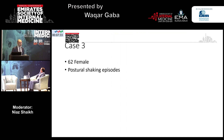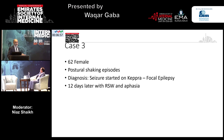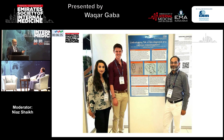Case three: a 62-year-old female having postural shaking episodes. She classically described that when she was looking up a ladder while painting, she would start getting shaking episodes in her legs. She was diagnosed with focal epilepsy and started on Keppra. Twelve days later, she presented with right-sided weakness and aphasia — a big stroke. CT was normal. Carotid Doppler showed a fully occluded right ICA and 75% stenosis of the left ICA. This was limb-shaking TIA, not seizure. She had left carotid endarterectomy, but by then she already had a deficit.